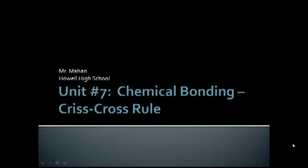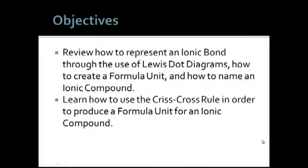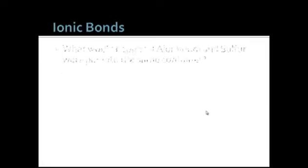With our previous vodcast, we had looked at what exactly happens when ions come in contact with each other, when a metal and a non-metal come in contact with each other, and they'll actually give and take their electrons to produce those ions. So we're going to very briefly review that, and then we're going to learn how to use that criss-cross rule in order to produce a formula unit.